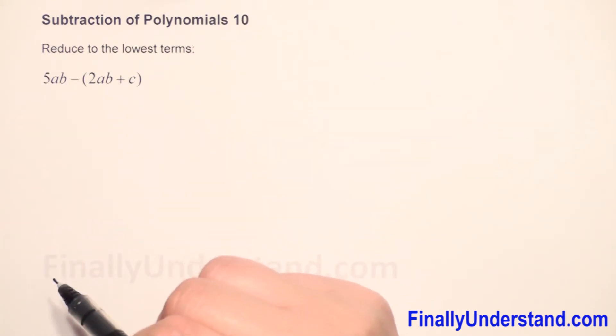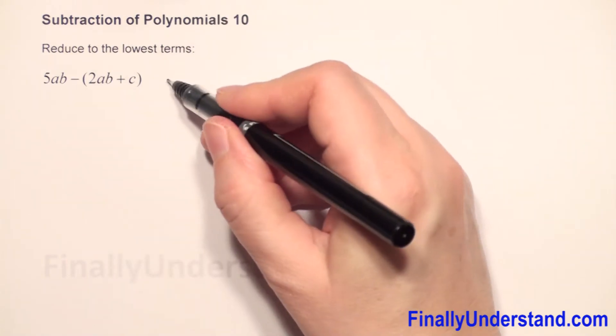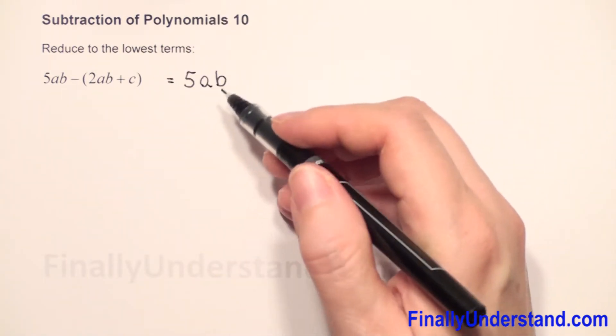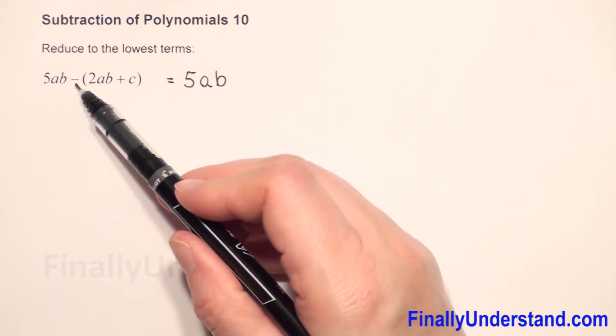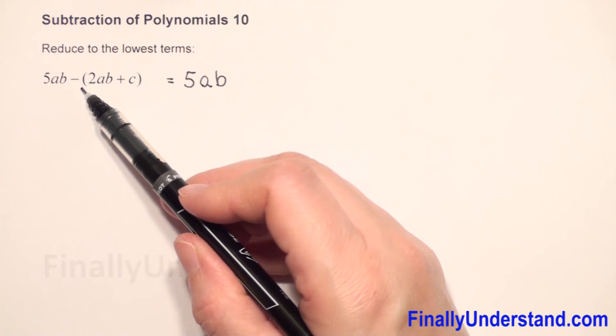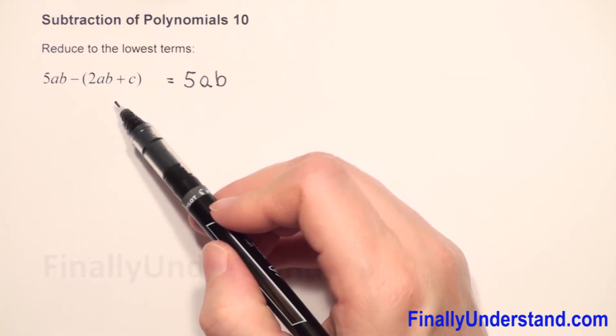Now first step we have to take down the parentheses. First term we will rewrite, we have 5ab, and next when we have a negative sign before parentheses it means we have to change the sign of every term in parentheses to opposite.